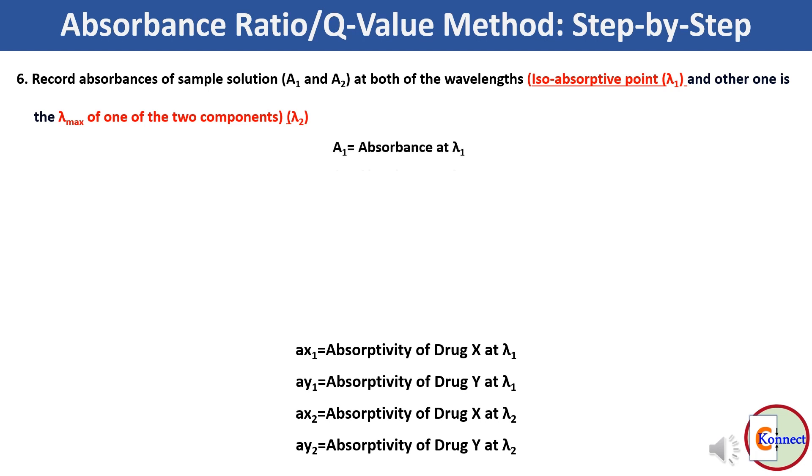Here, A1 is the absorbance at lambda 1, and A2 is the absorbance at lambda 2.